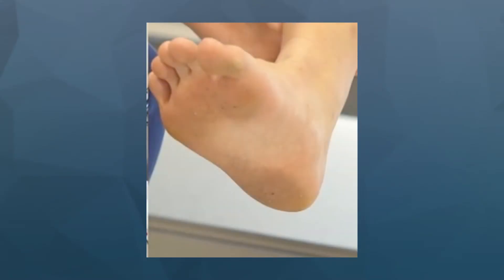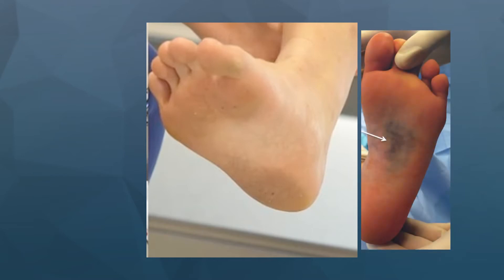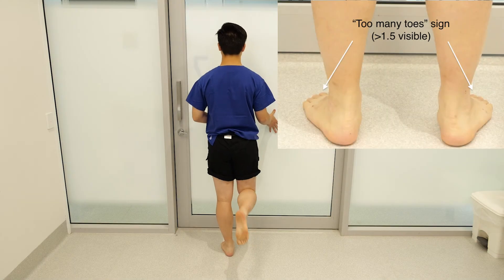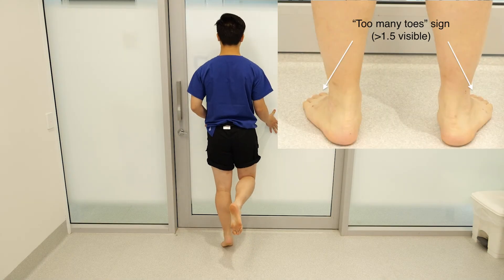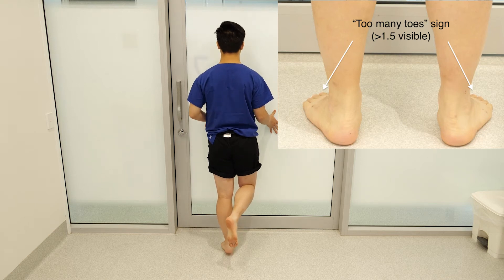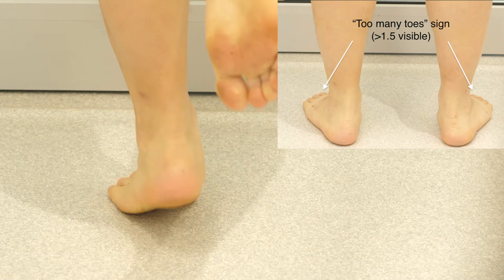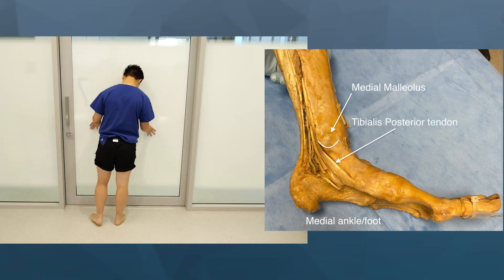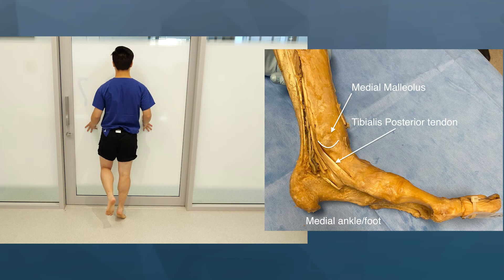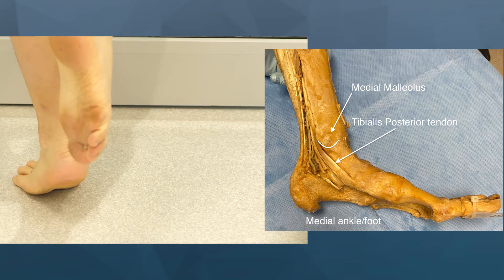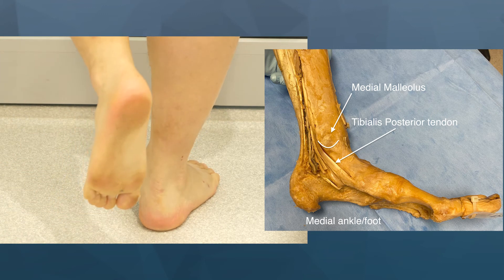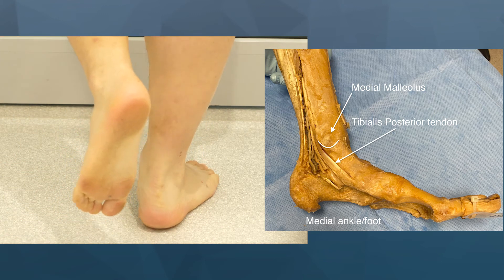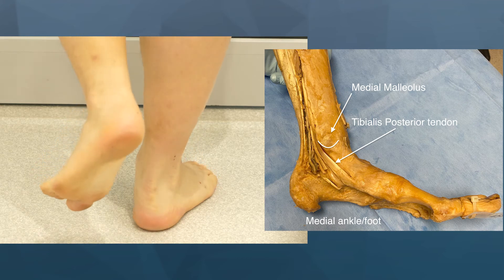Finally, assess the plantar foot, including for any plantar ecchymosis, which is pathognomonic of a Lisfranc injury. Here in our patient with bilateral pes planus, notice that 2.5 digits are visible on the lateral aspect of the foot, indicating likely tibialis posterior insufficiency — the most common cause of adult acquired flat foot deformity. If a patient has pes planus, it is important to ask them to perform a single heel raise test, another way to assess tibialis posterior tendon insufficiency. Patients will have difficulty performing a single heel raise; patients with a normal tendon can complete around 8 to 10 repetitions.